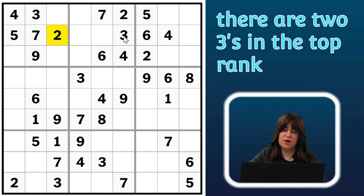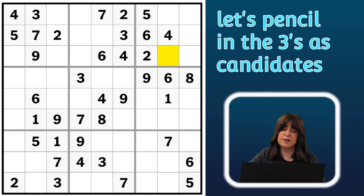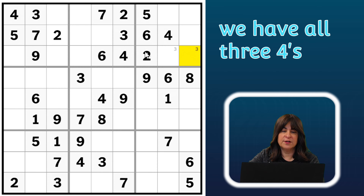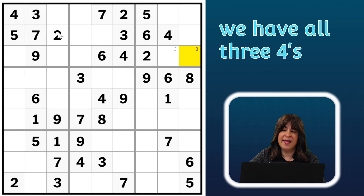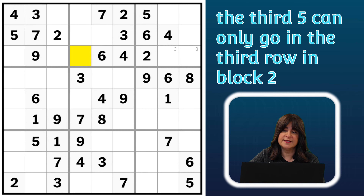Let's move on to the number three. There are two threes, so the third three has to go into one of these two cells. Looking down the columns, I can't eliminate either of those cells, so I'm going to pencil in threes to remind myself. Later, if I place a number into one of those two cells, then I'll know that the other cell is a three. Moving on to the number four — we have all three fours — so let's move on to the number five. We have fives in the first and second rows, so there must be a five in the third row, and the only place it can go is here.